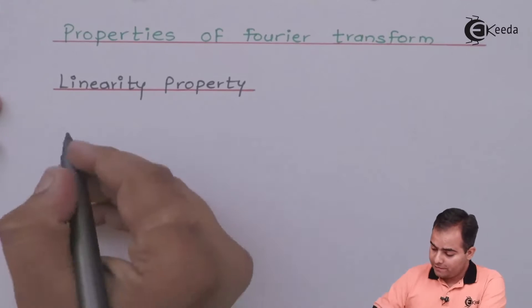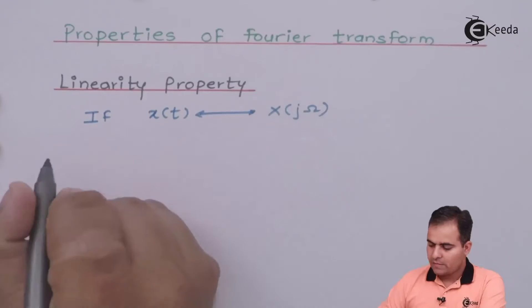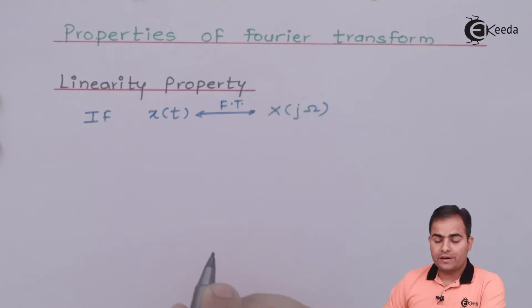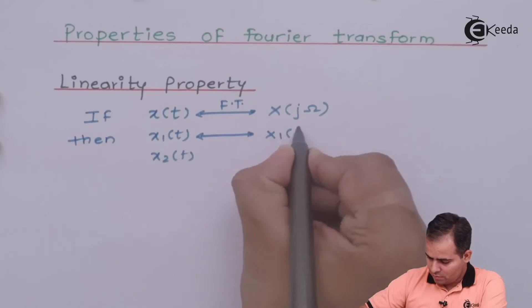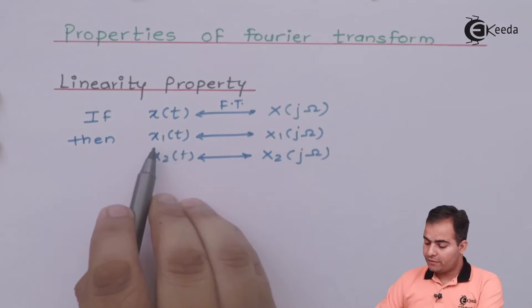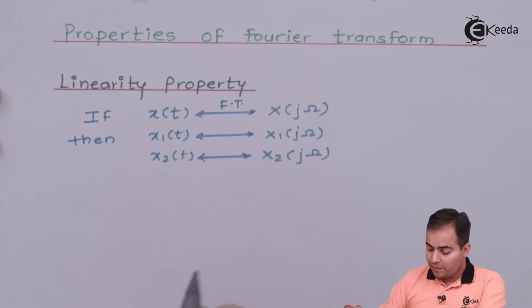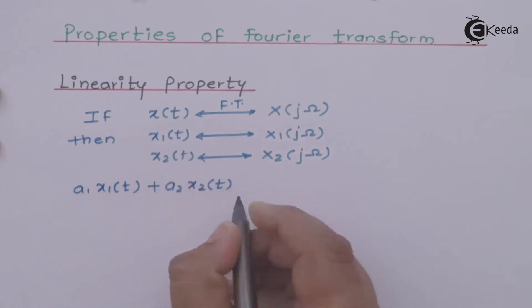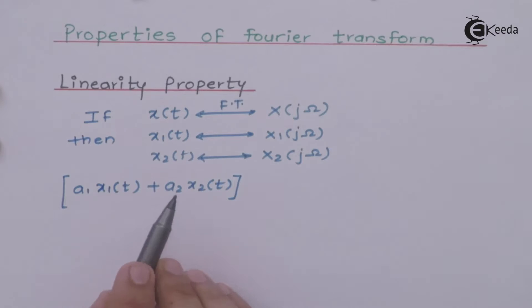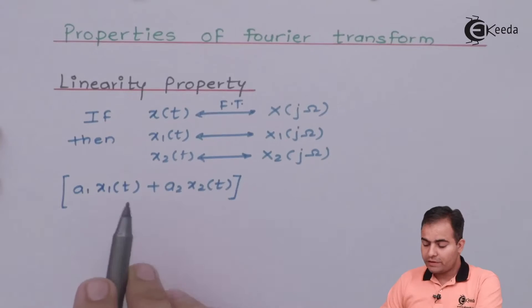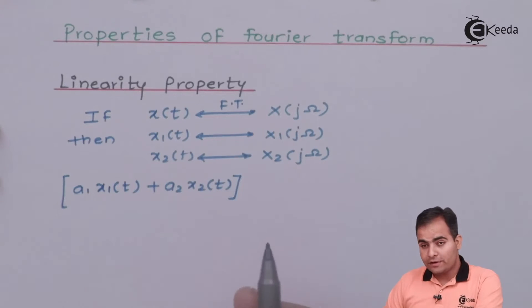So, if x(t) Fourier transform is X(jω), x₁(t) Fourier transform is X₁(jω), and x₂(t) Fourier transform is X₂(jω), then the statement is: if you are going to find out the Fourier transform of a₁x₁(t) + a₂x₂(t), where a₁ and a₂ are constants and x₁ and x₂ are two different functions, and if you obtain the Fourier transform of these two functions, then the result in the Fourier domain is...